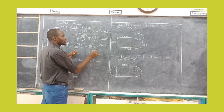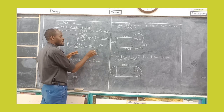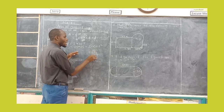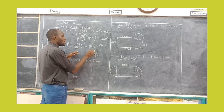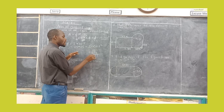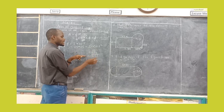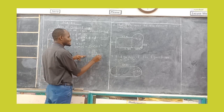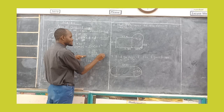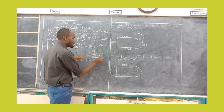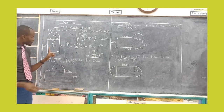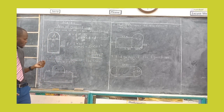You add 157 plus 500. 7 plus 0 is 7, 5 plus 0 is 5, 1 plus 5 is 6. That becomes 657 — the area of the combined shape, in meters squared.